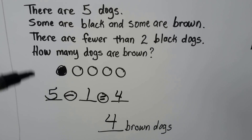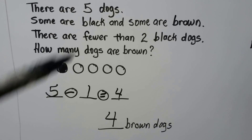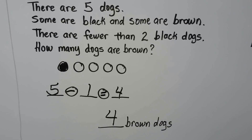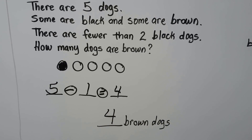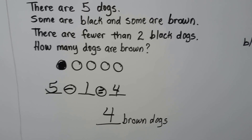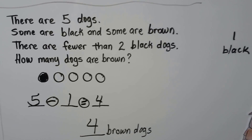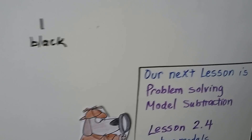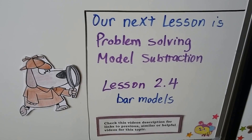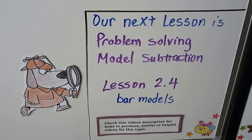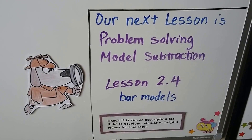Be very careful when you see the words 'fewer than' or 'more than.' If it's fewer than two, it can't be two — it has to be smaller. Our next lesson is going to be problem solving: model subtraction, Lesson 2.4, and we're going to be doing subtraction with bar models.